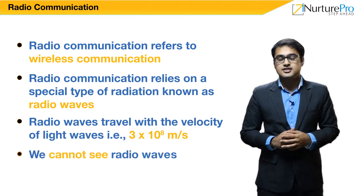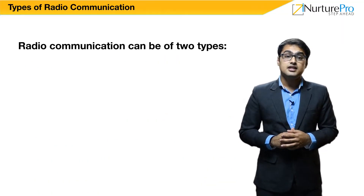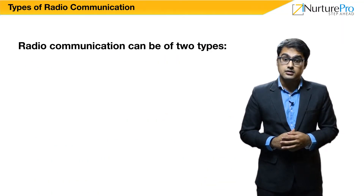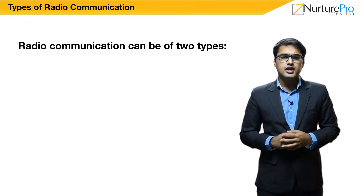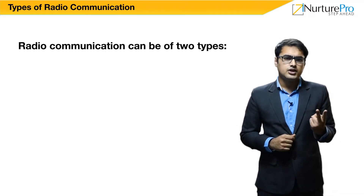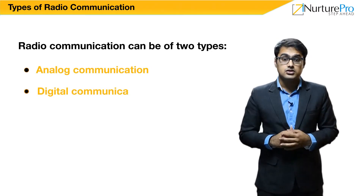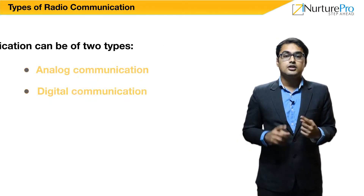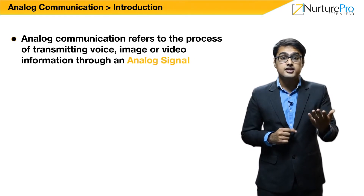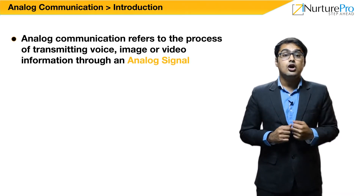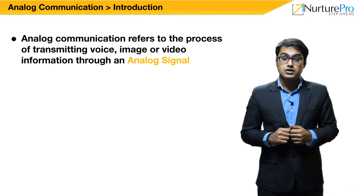You cannot see such radio waves. Radio communication can be of two types: first, analog communication, and second, digital communication. Analog communication refers to the process of transmitting voice, image, and video information through a continuous signal.